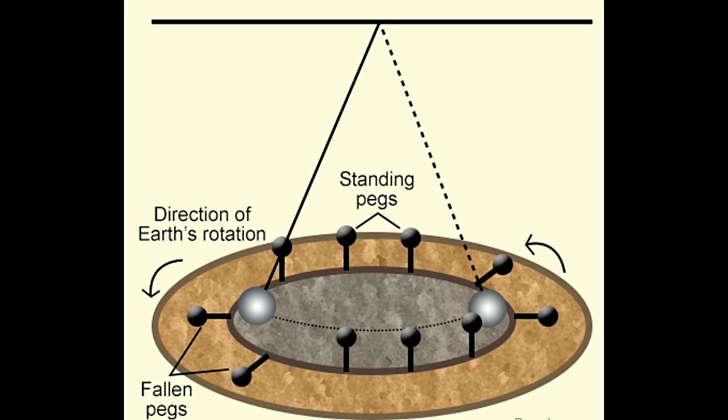The only explanation for this phenomenon is that while the pendulum swung back and forth undisturbed along a straight line, the earth and therefore the floor beneath the pendulum moved, thus rotating the circle of pegs along with it.